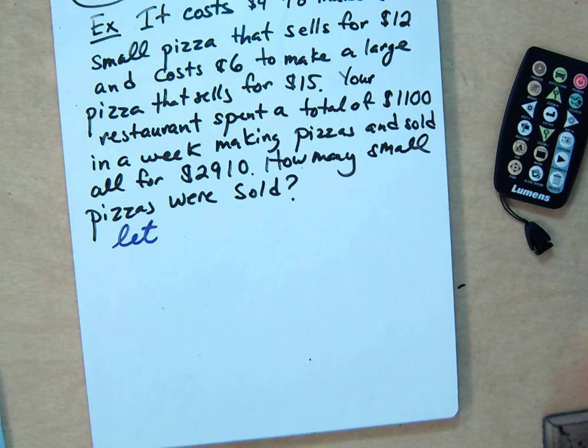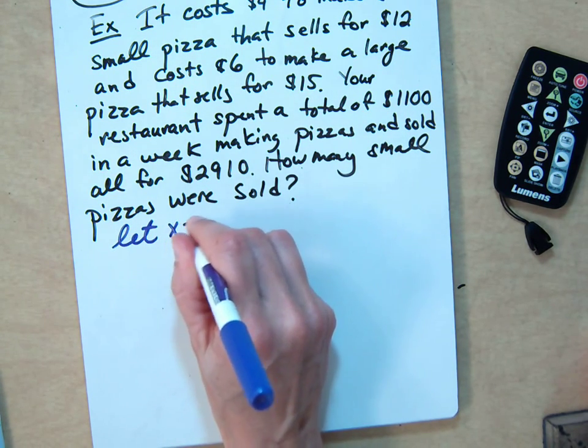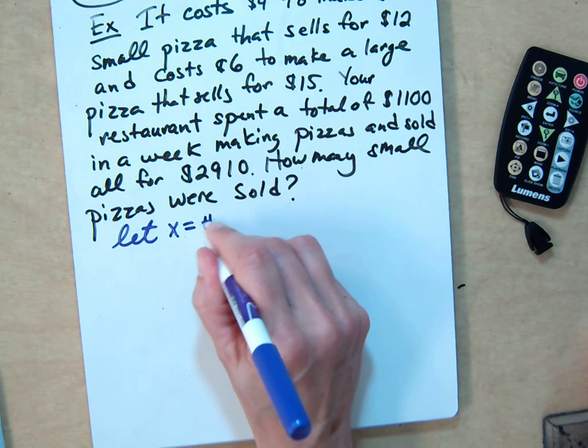There are only two things, and usually the question will tell you what at least one of those things is. So what is the question asking for? How many small pizzas? Good. So look at the question. It says how many small pizzas. That's one of your variables. So you need to define them. Let x equal the number of small pizzas.